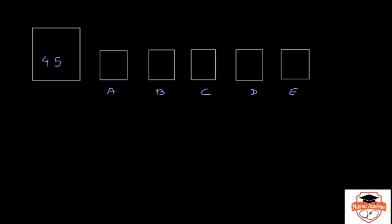There are 2 ways to approach this problem. Number 1 is to pick a box and put some of these syringes into it, and hope you can put the same number in the other boxes as well. But if you aren't good with numbers, you won't know how many of those 45 syringes will go into each one of these boxes — remember, they all need to have the same number.